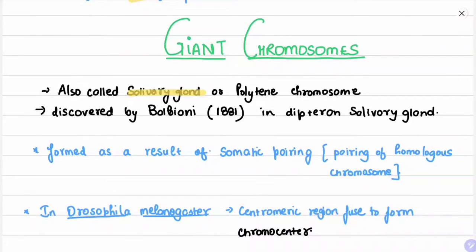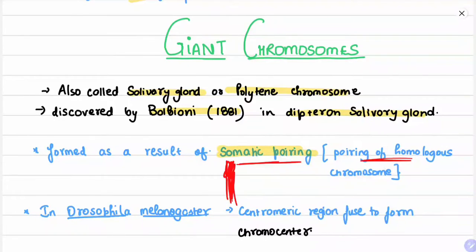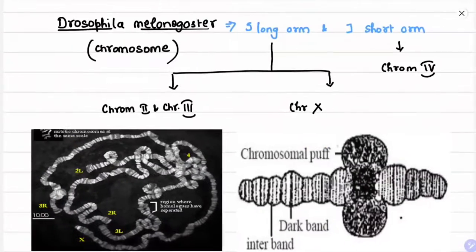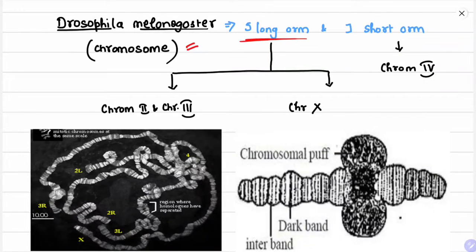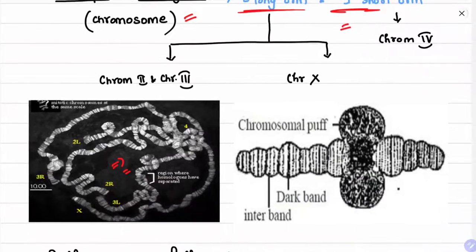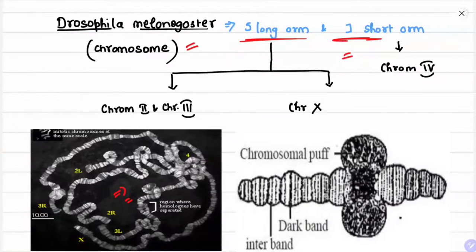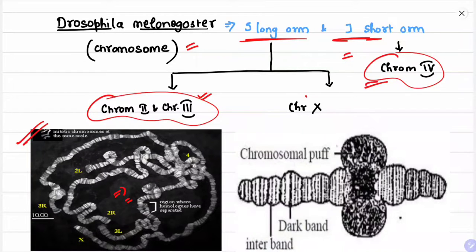Giant chromosomes, also called salivary gland or polytene chromosomes, were discovered by Balbiani in the Diptera salivary glands. They are formed as a result of somatic pairing — homologous chromosomes pair with each other to form a huge chromosome. In Drosophila melanogaster, the centromeric regions fuse to form a chromocenter. The Drosophila melanogaster giant chromosome has five long arms and one short arm: the short arm is from chromosome 4, four long arms are from chromosomes 2 and 3, and one arm is from chromosome X.